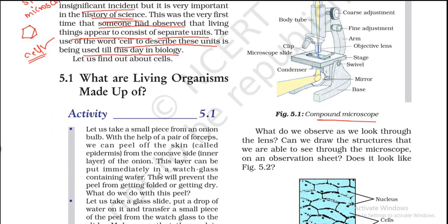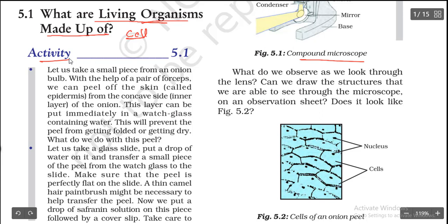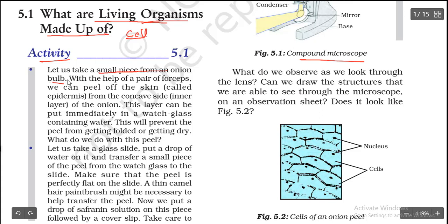Let us go deeper into cells — how they are made and what types or forms exist. All living organisms are made up of cells. To understand this, let us perform an activity. Take a small piece from an onion bulb — the onion you see in your house. Cut it and take one small piece. With the help of forceps, peel off the thin skin layer.